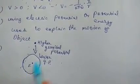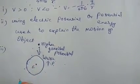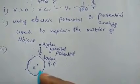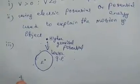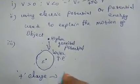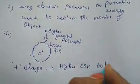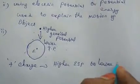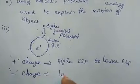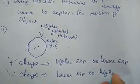The negative charge moves from lower electrostatic potential to higher electrostatic potential. To summarize: the positive charge moves from higher electrostatic potential to lower electrostatic potential, and the negative charge moves from lower electrostatic potential to higher electrostatic potential.